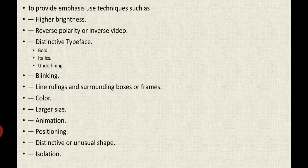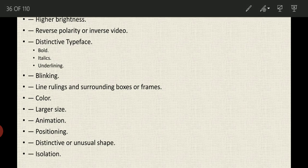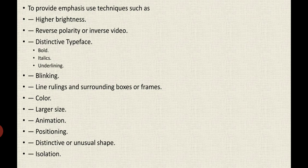Other techniques include line ruling and surrounding boxes or frames. You can underline things or use boxes or frames so that the user will understand that this content or information is important. We can also make use of different colors — bright colors, higher brightness — and contrast colors, so the user will understand that this is the prominent element of the screen or design.